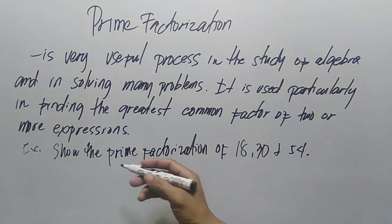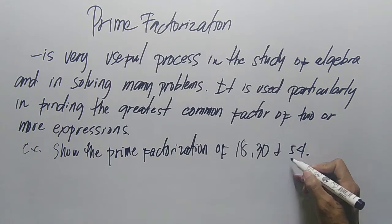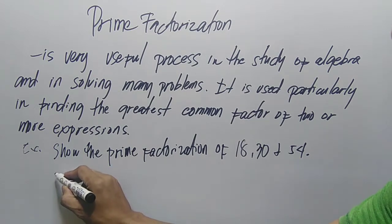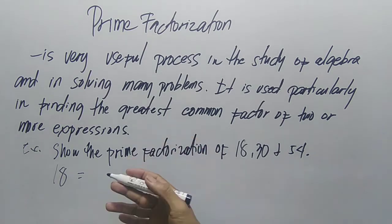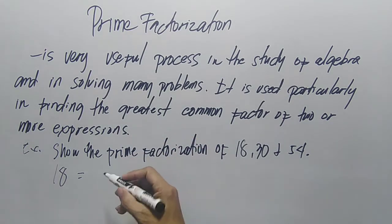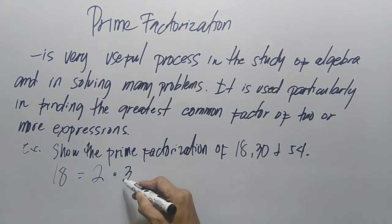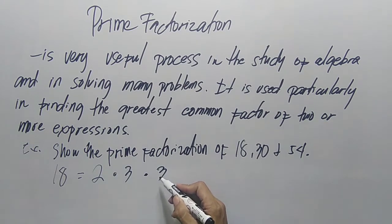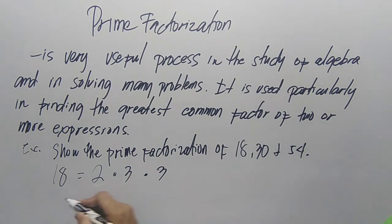Let's have an example. Show the prime factorization of 18, 30, and 54. For 18, the prime factorization is 2 times 3 times 3. That is 6 times 3, which equals 18.